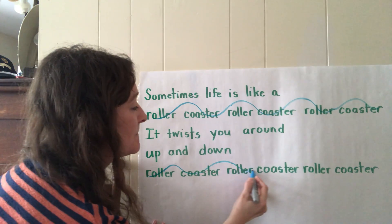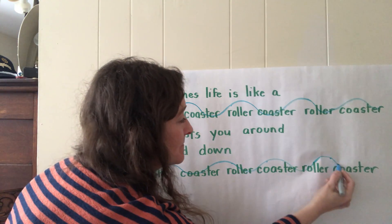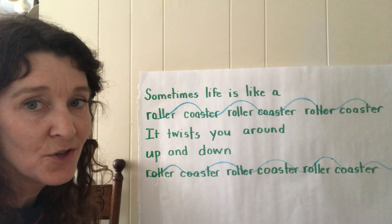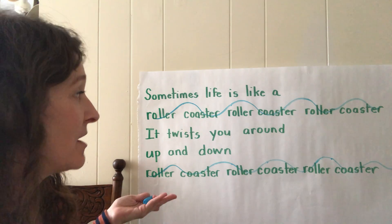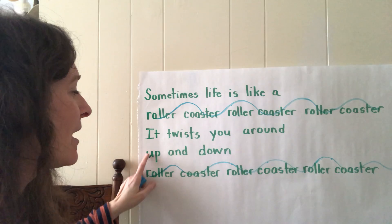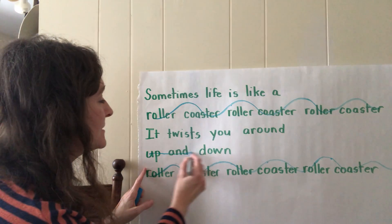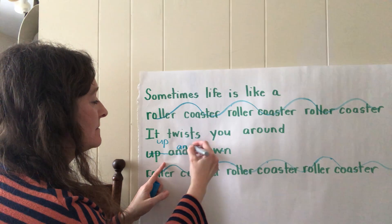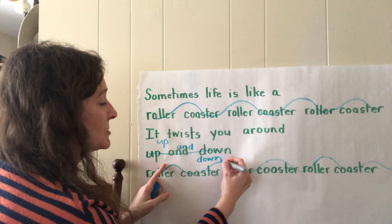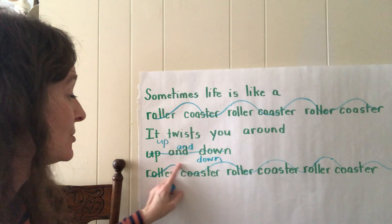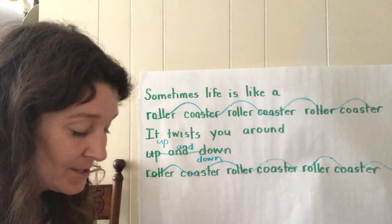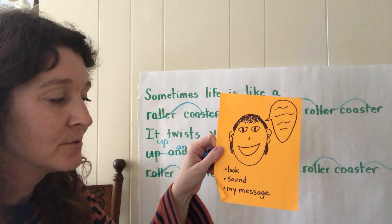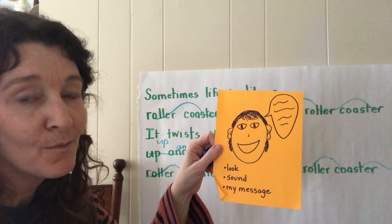I'm going to do that on this part too, and let me see if there are any other parts I want to change for how I display it on the page. 'It twists you around, up and down' — I think for this part I'm going to make my words go up and down like stairs, and then I'll write the words 'roller coaster' like a roller coaster. Did you see how I thought about how I want my poem to look, how I want it to sound, and how it helps support my message when people read it?